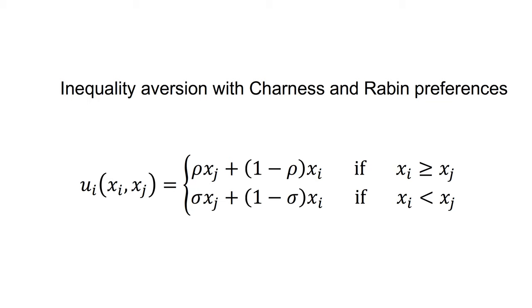For most people, rho is greater than sigma — they give more weight to others' utility when they are better off. Sigma can also be less than zero: if they are behind someone, they place negative weight on further gains by that person.